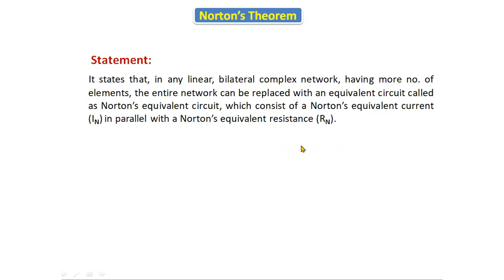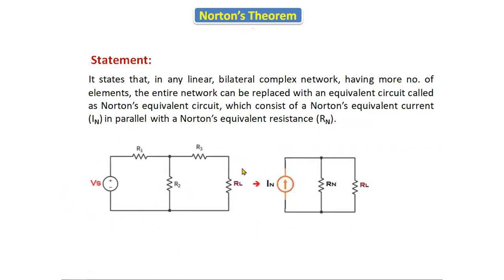So if we take one circuit, the total circuit can be replaced by Norton's equivalent current source connected in parallel with Norton's equivalent resistance, and that is connected in parallel with the load resistance R_L. This is the given circuit, and for the given circuit we will convert it into the total equivalent circuit.